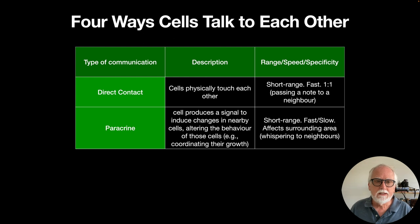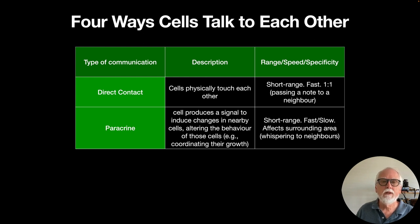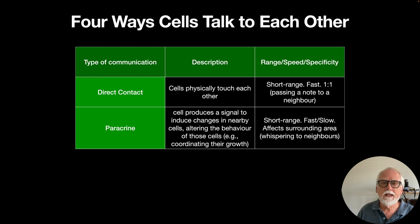The second type is paracrine communication, where a cell produces a signal to induce changes in nearby cells. For example, during development, cells signal to one another to coordinate their growth. The cells send a very short-range communication to just nearby cells. It can be fast or slow, but the specificity is that it affects the surrounding area of that particular cell — it's like whispering to your neighbors.